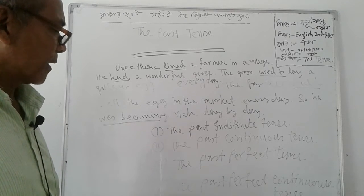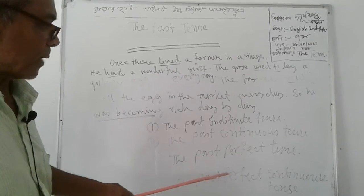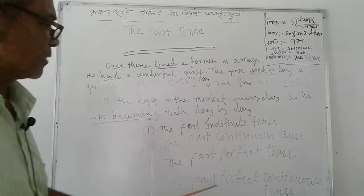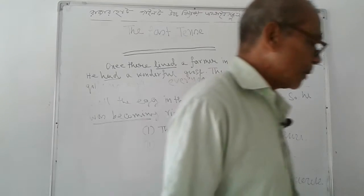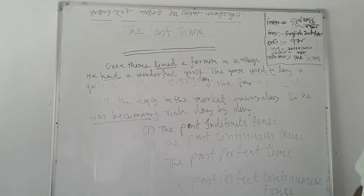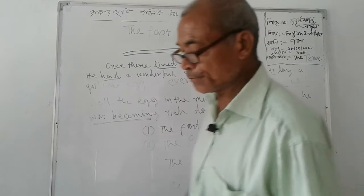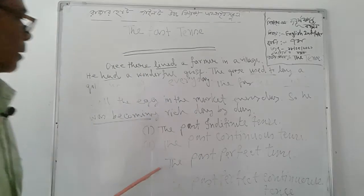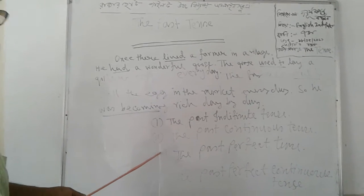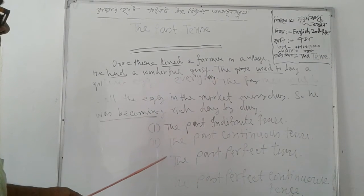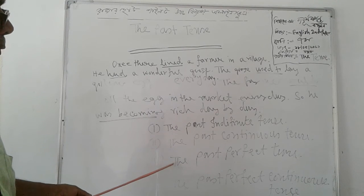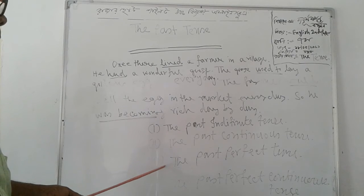Now I am discussing about the past perfect continuous tense. What is called past perfect continuous tense? The past perfect continuous tense is used when we are talking about an action that had begun before a definite moment in the past and was continued up to that moment or was in progress at that moment.